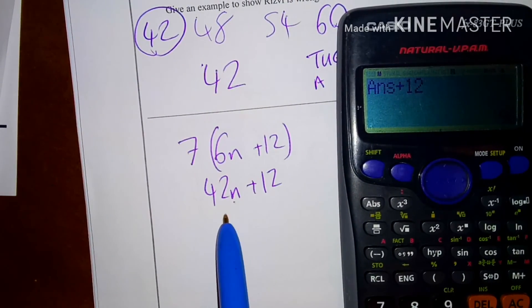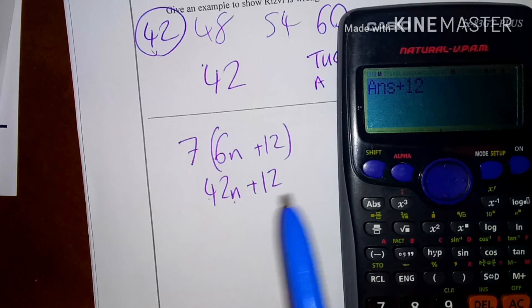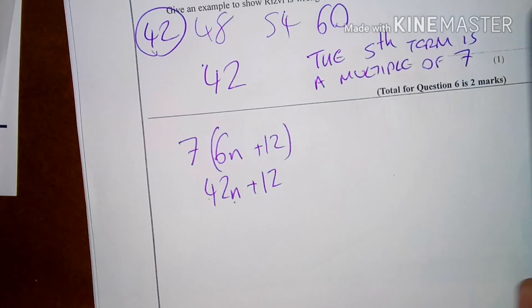So, your statement really is that all numbers that are times by 42 and then add 12 will be in the sequence and is a multiple of 7. Thank you.